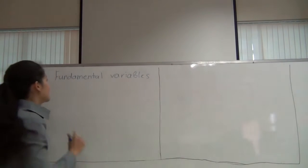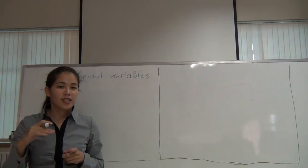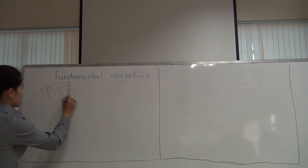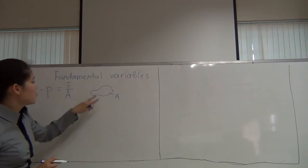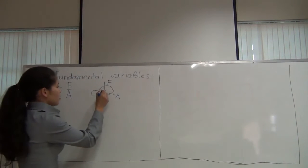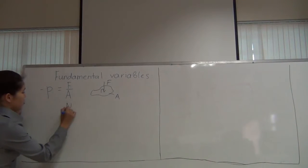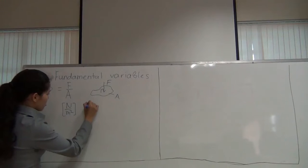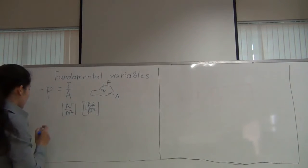The first fundamental variable is pressure. Pressure is the normal force acting on the surface of a unit area, defined as force divided by area. If you have a unit area surface, pressure is the force acting perpendicularly on it. Pressure is measured in newtons per meter squared, or in English units, pounds force per feet squared.